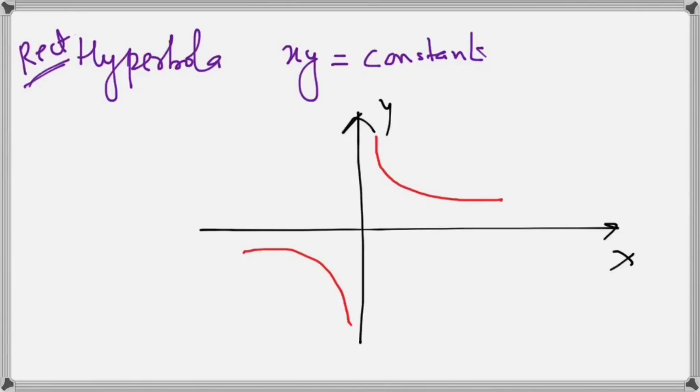So these are the most important types of graphs that will often come in physics. Mostly you will be encountering lines and parabolas, and occasionally the hyperbola and the ellipse and circle. Please remember these equations and what kind of graphs they represent. I will see you in the next video where we will talk about differentiation.